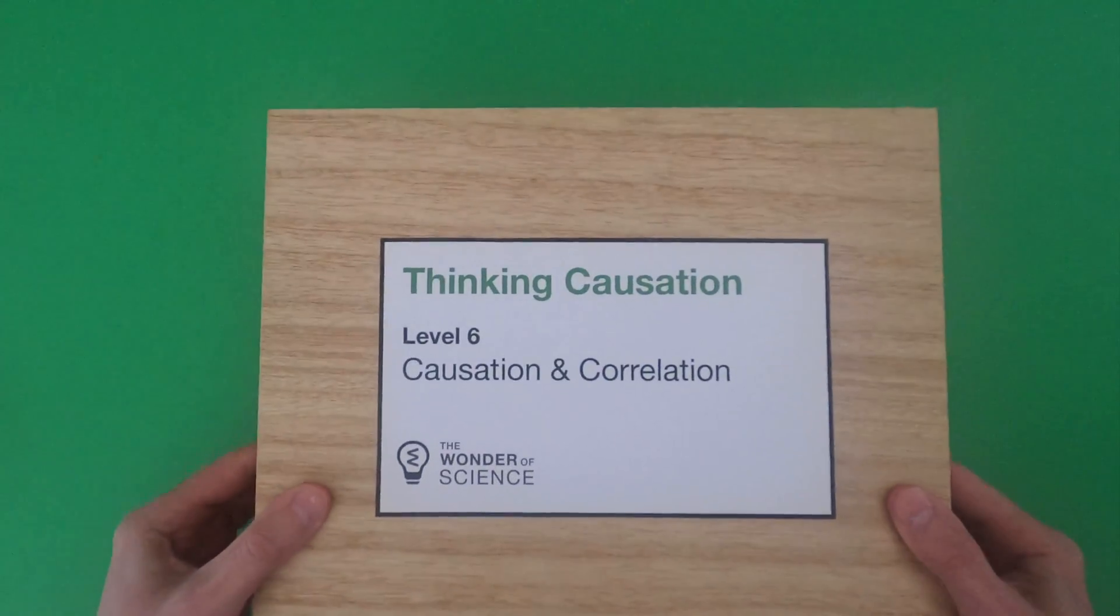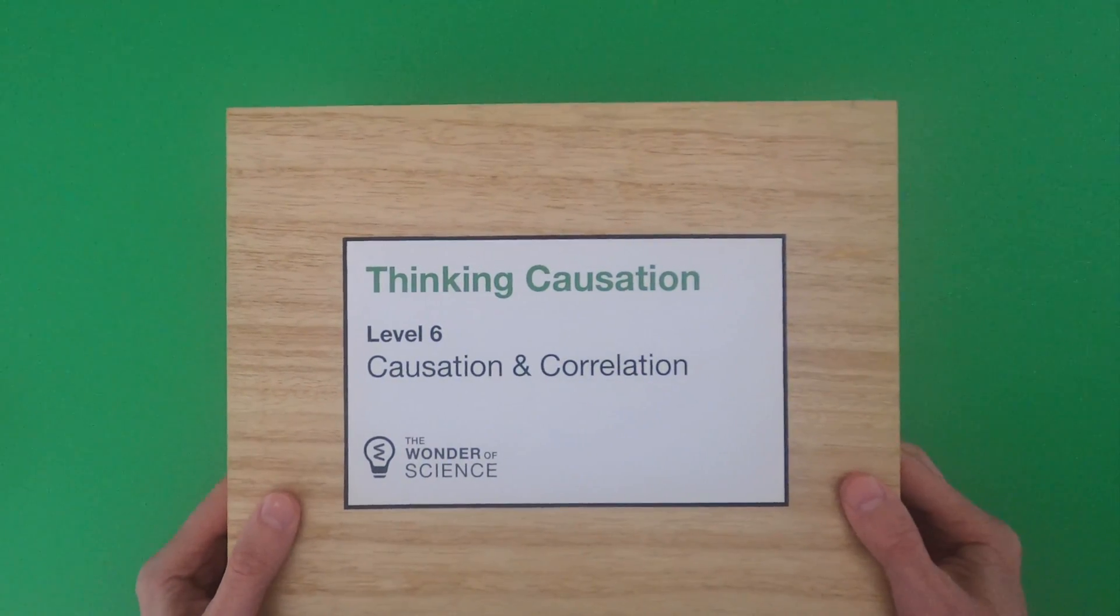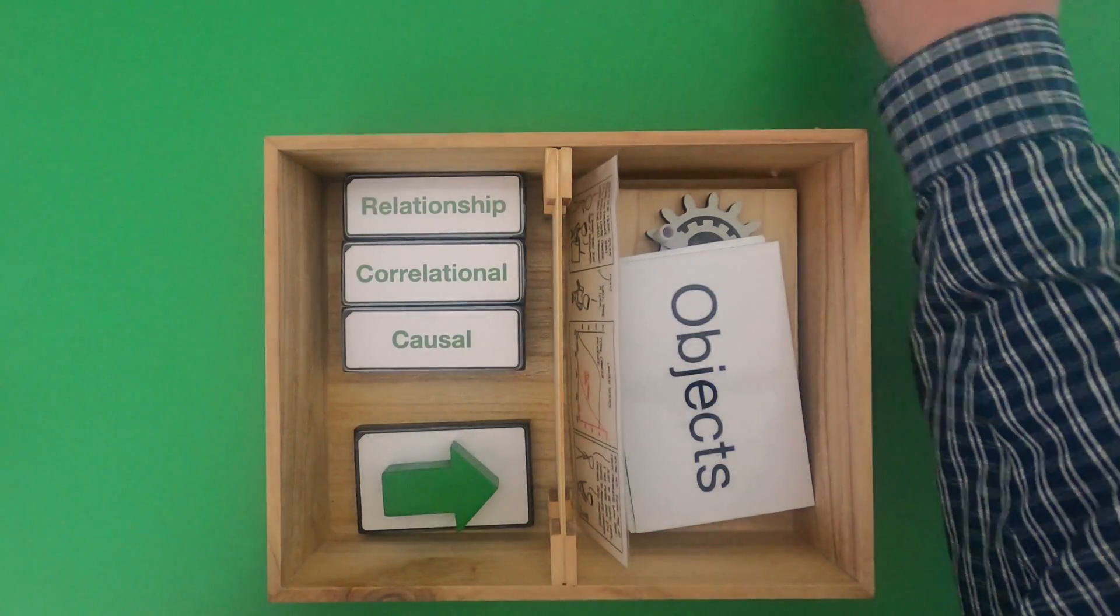Hi, it's Mr. Andersen and this is Thinking and Causation level six, Causation and Correlation. We're going to show our thinking on this system board in just a second.